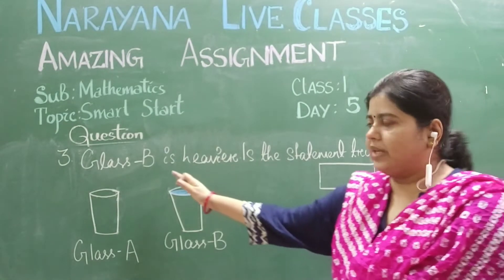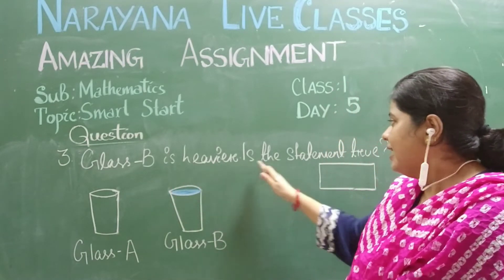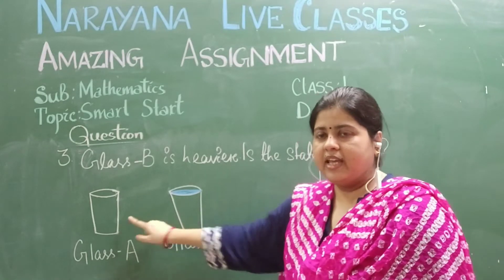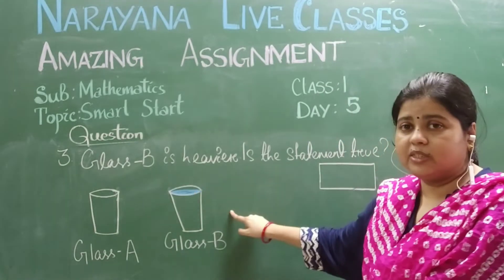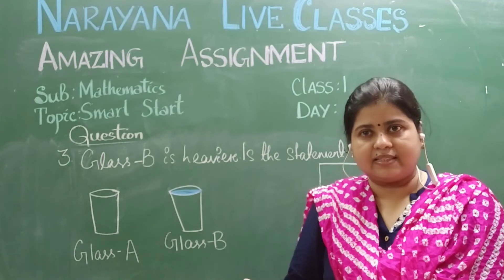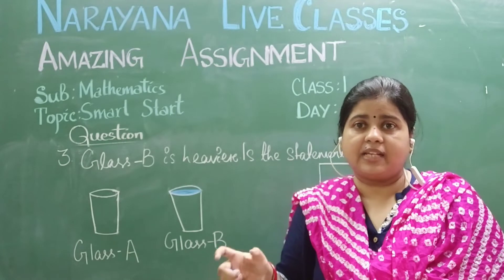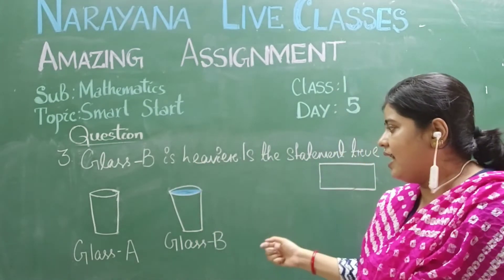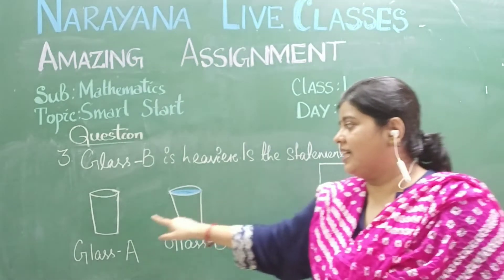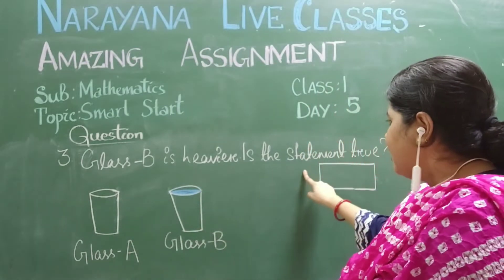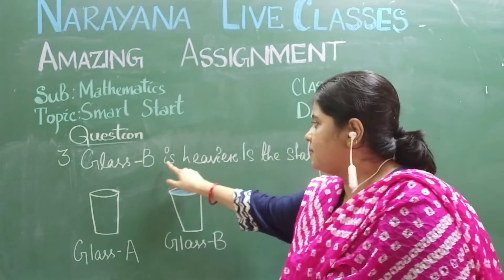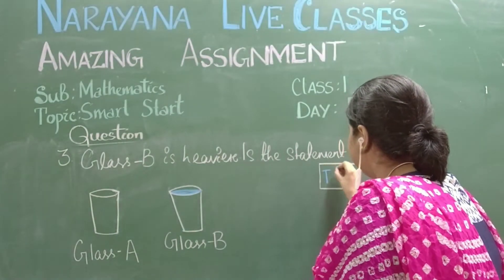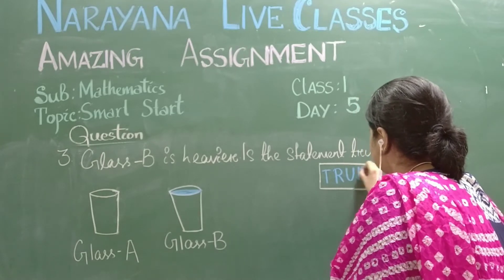Now we come to the third question from the assignment: 'Glass B is heavier — is the statement true?' You can see two glasses on the board, one empty and one filled with water. You can try this at home — hold one empty glass and one with water, and check which is heavy. Obviously the glass filled with water will be heavier than the empty glass. So the statement is true. Write 'True' here.